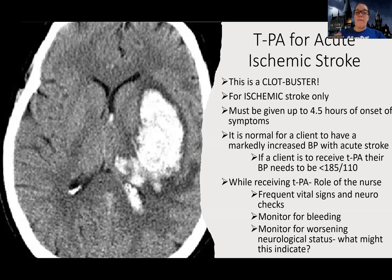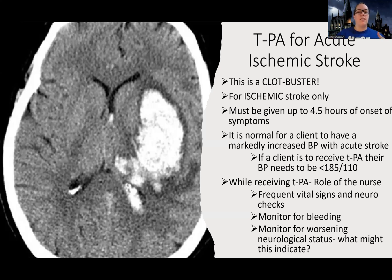TPA must be given within four and a half hours of symptom onset. Some books say three to four and a half hours, which may vary by hospital. This doesn't mean we wait until three hours — if someone came in with symptoms that started 30 minutes ago, we wouldn't wait. After about four and a half hours, the risk of giving TPA outweighs the benefit. That's why asking 'when did your symptoms start' and 'what was your last known normal' is so critical.